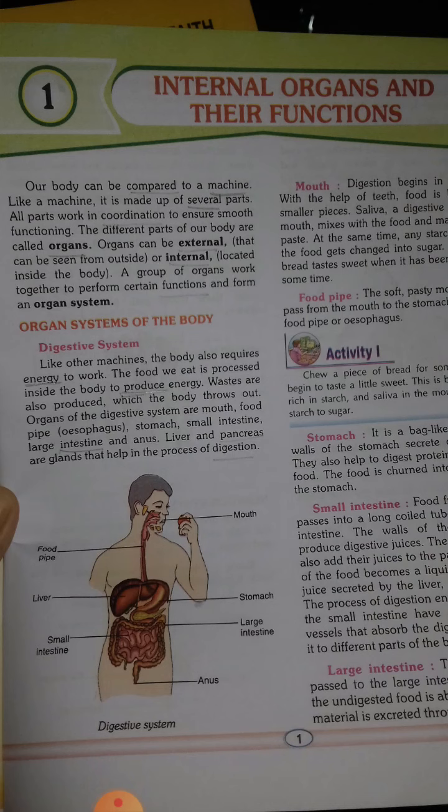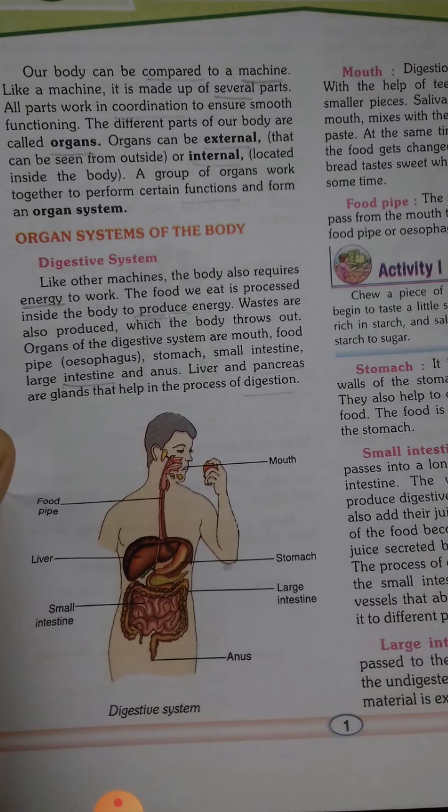The organs of the digestive system are: mouth, food pipe — which can also be called the esophagus — stomach, small intestines, large intestines, and anus. Liver and pancreas are glands that help in the process of digestion. Here you can see a picture of the digestive system showing all these parts.